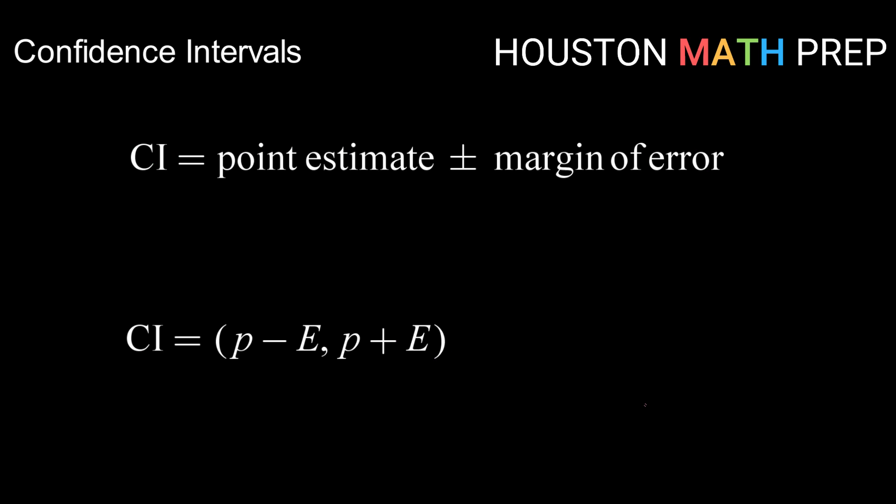There are lots of different types of sample statistics and there are lots of different types of confidence intervals. Speaking very generally, the way that we calculate a confidence interval is we start with a point estimate. Now a point estimate is an unbiased estimator from a sample. The two main types of point estimates that we are going to work with are sample means, that is x-bar, and sample proportions, that is usually p-hat. So we start with something from a sample. That's going to be the center of our confidence interval.